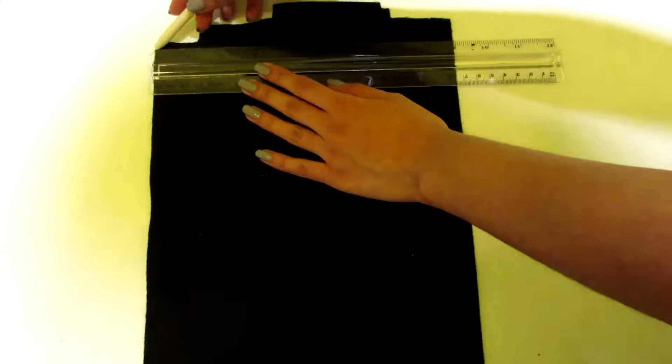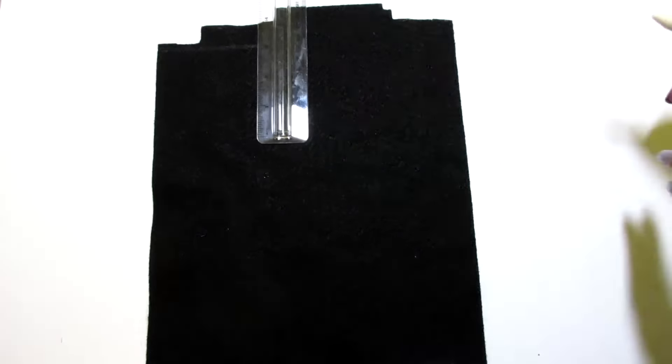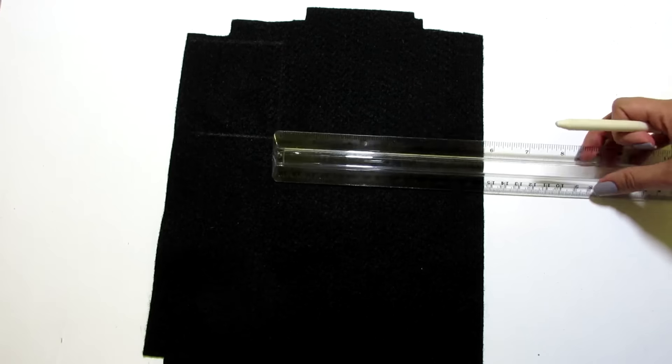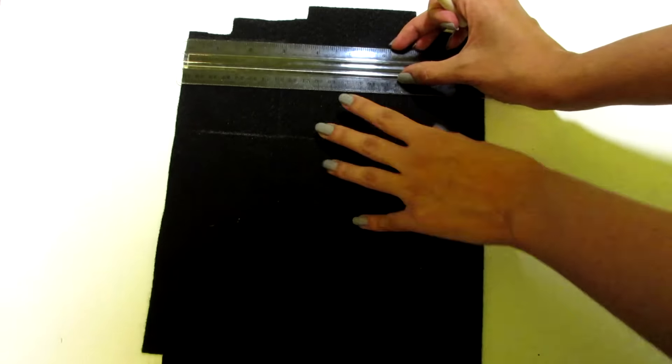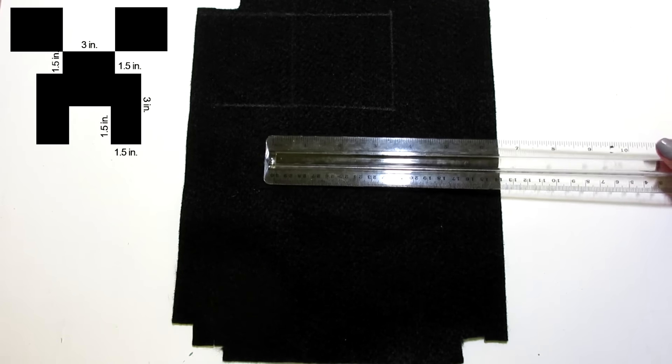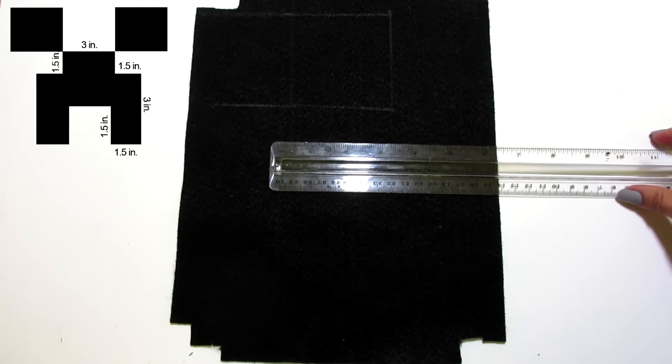What we're going to do now is begin measuring our creeper face. First, we're going to start off by drawing the eyes. You want to do this by drawing a 3 by 3 inch square. So once you've drawn one, right next to that, draw your second eye which will also be the same size. Now we need to draw the mouth. I'll have a picture on the screen showing you the measurements if at any point you get confused. Start off at the middle of the felt and draw a 3 inch line.